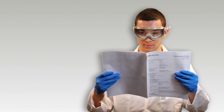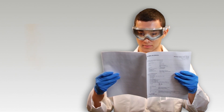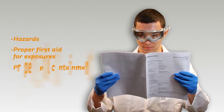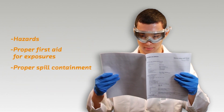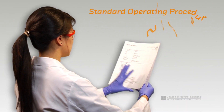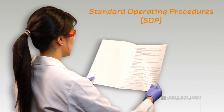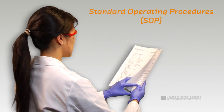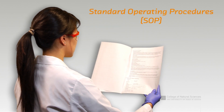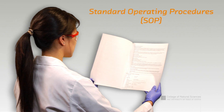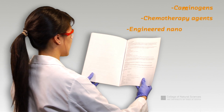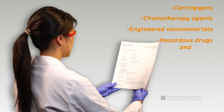The SDS contains important information about the compound including hazards, proper first aid for exposures, proper spill containment, and physical characteristics of the compound. Standard Operating Procedures are very important as they provide guidance in the form of written procedures for the safe handling and disposal of particularly hazardous substances, including carcinogens, chemotherapy agents, engineered nanomaterials, hazardous drugs, and toxins.